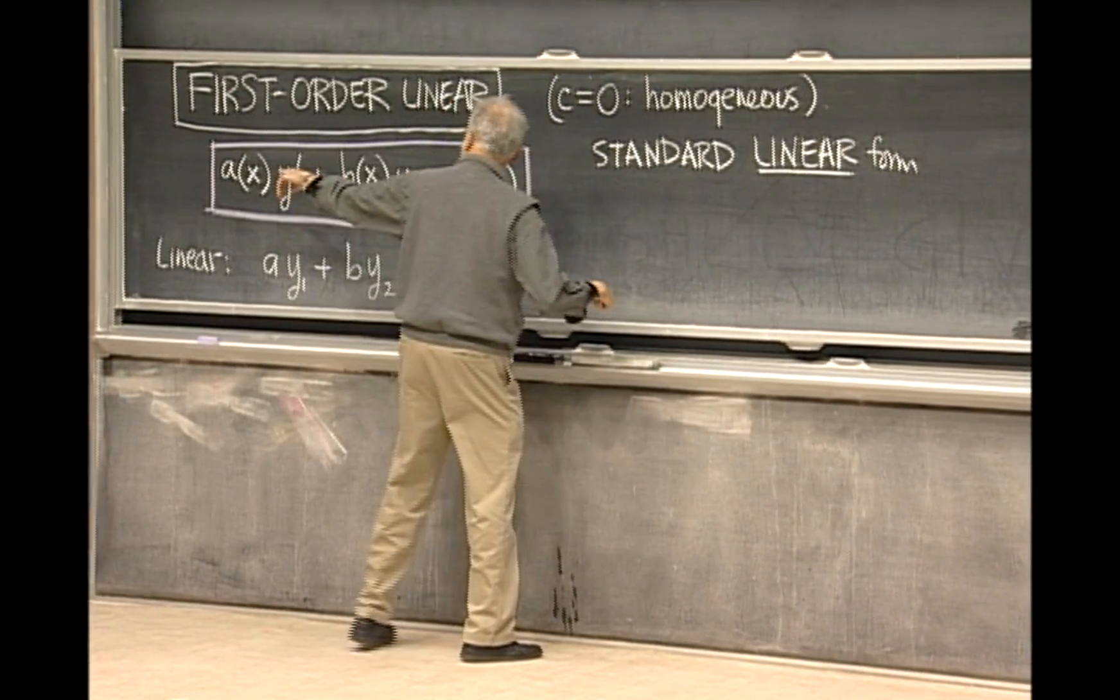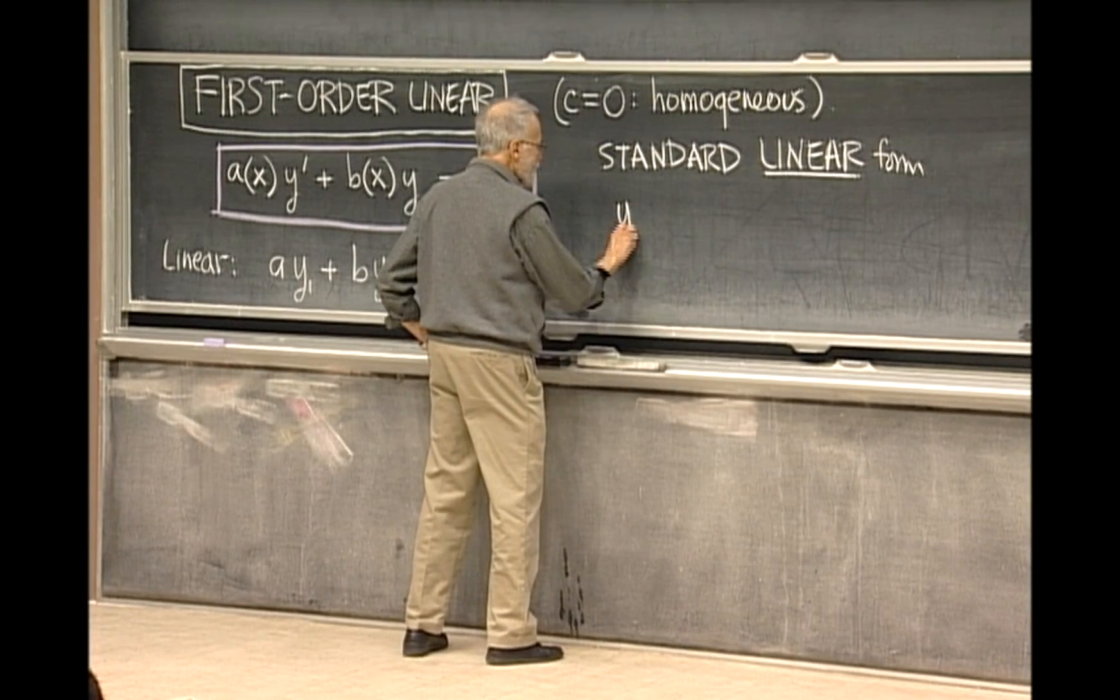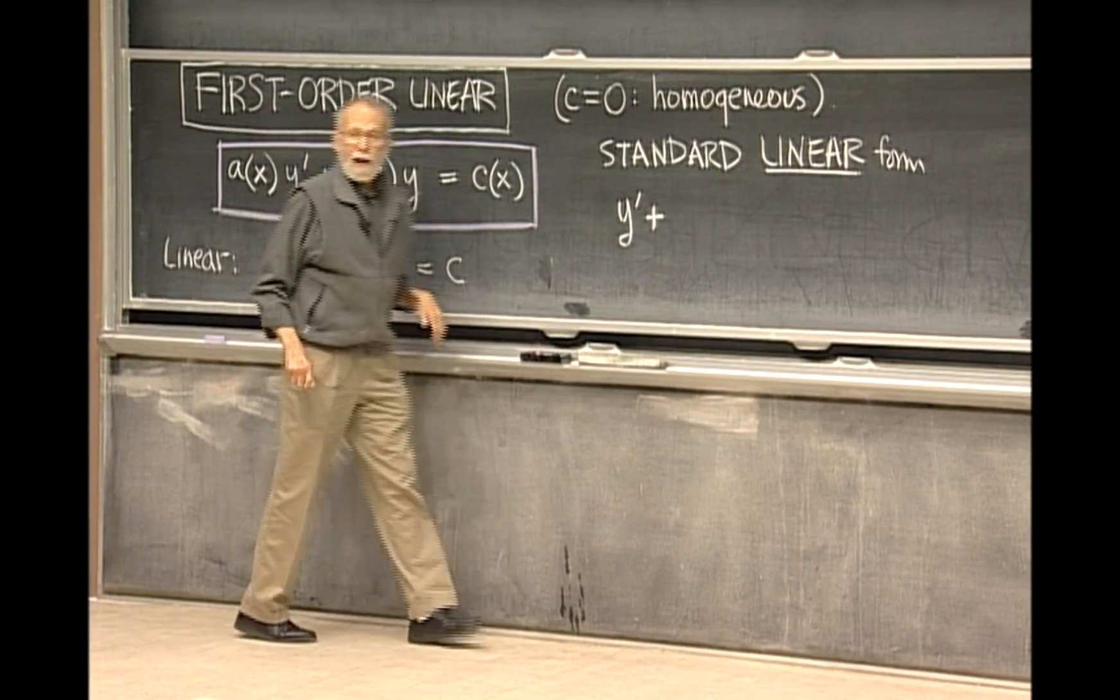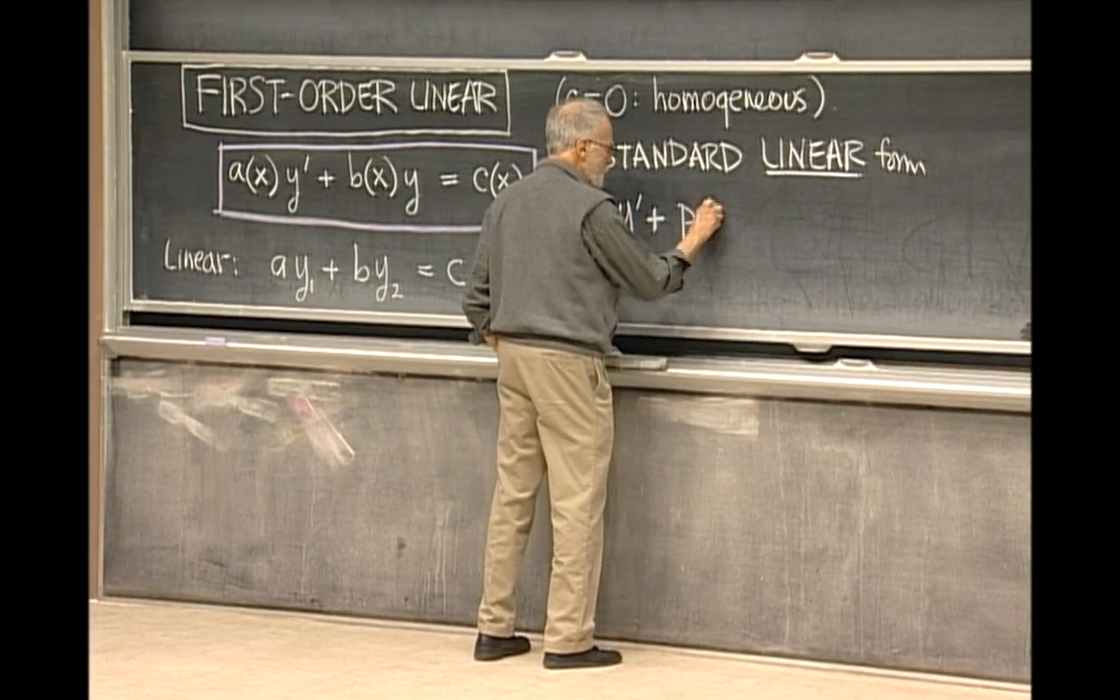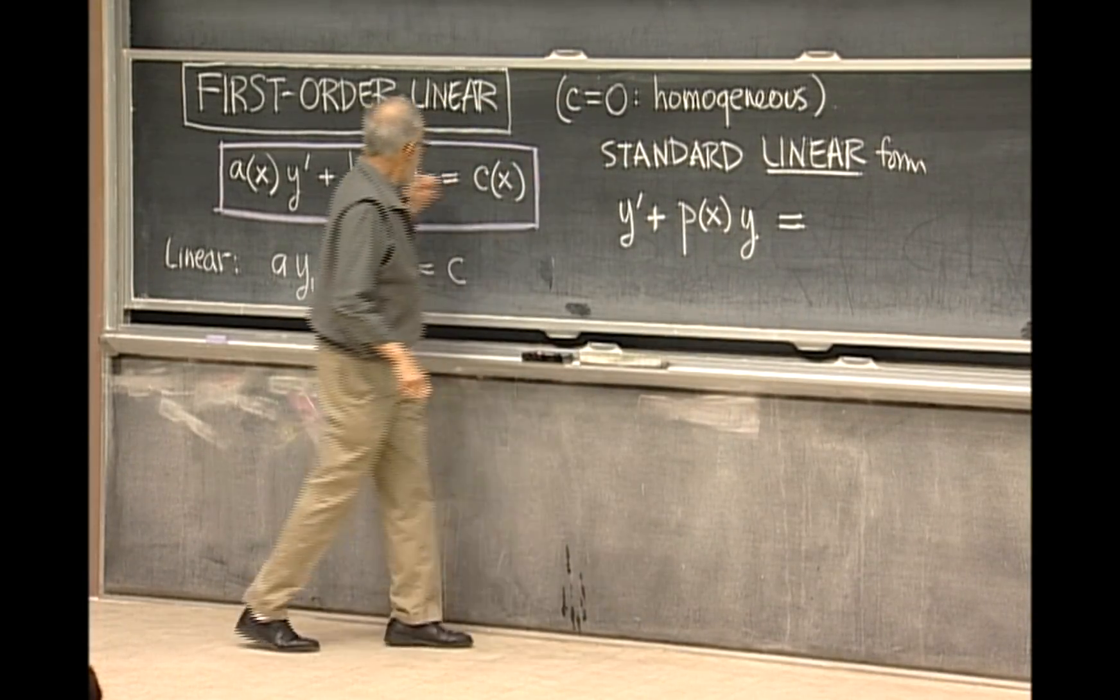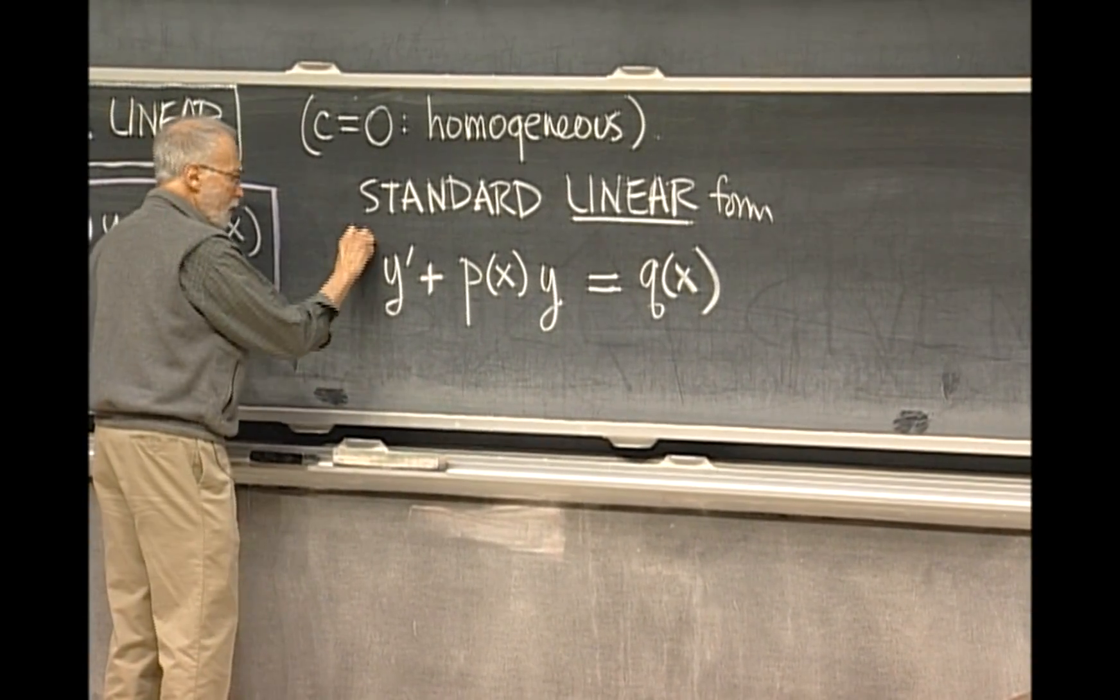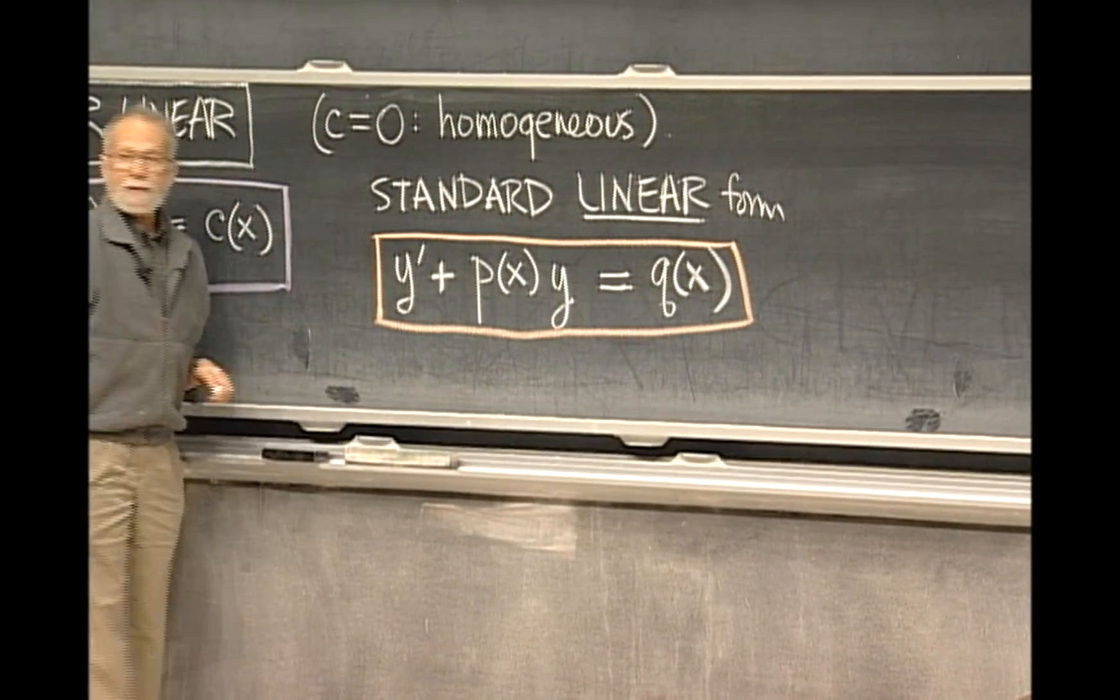You can always convert that to standard form by simply dividing through by a(x). If I do that, the equation will look like y prime plus - now it's common to not call it b anymore because it's really b over a, and therefore it's common to adopt a new letter for it, and the standard one that many people use is p. How about the right-hand side? We need a new letter for that too. It's c over a, but we'll call it q. So when I talk about the standard linear form for a linear first-order equation, it's absolutely that that I'm talking about.